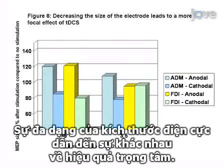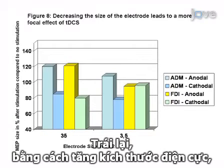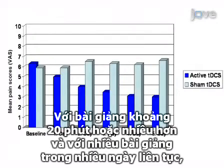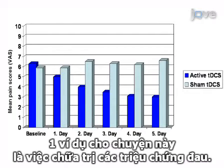The variation of electrode size leads to a variation of focal effects. With a decrease of the diameter of the electrode, a more focal stimulation can be achieved. On the other hand, by increasing electrode size, it is possible to have a functionally ineffective electrode. With session duration of 20 minutes or more, and with multiple sessions over consecutive days, the after-effects of tDCS are longer lasting. An example of this is the treatment of pain syndromes.